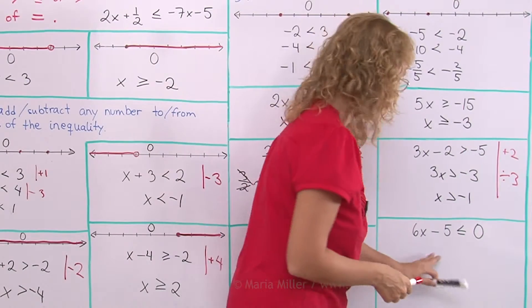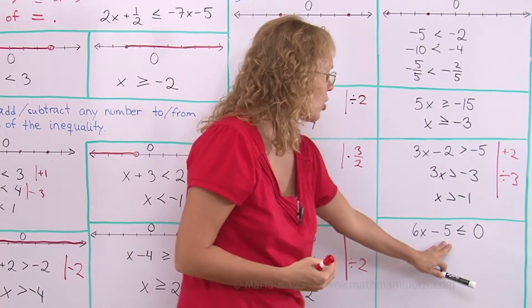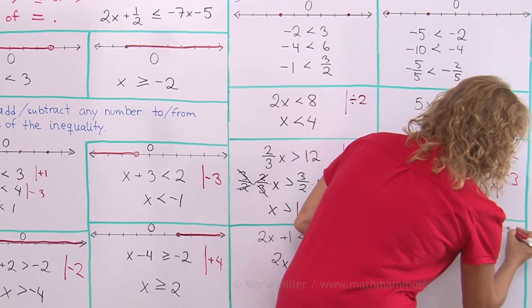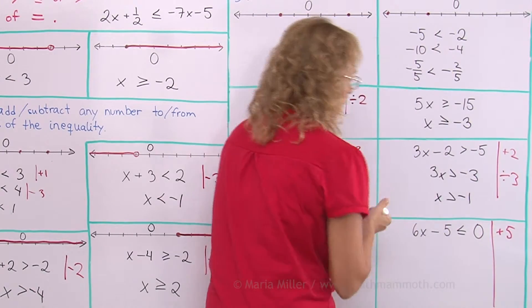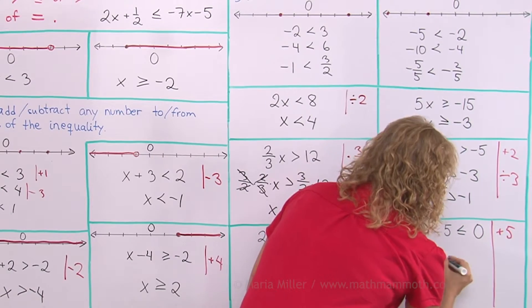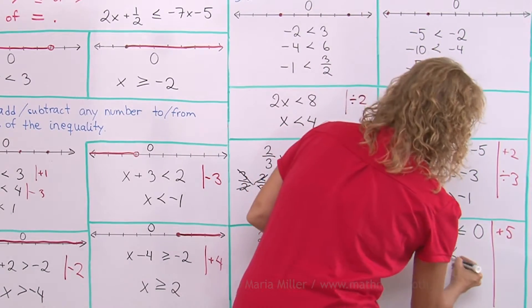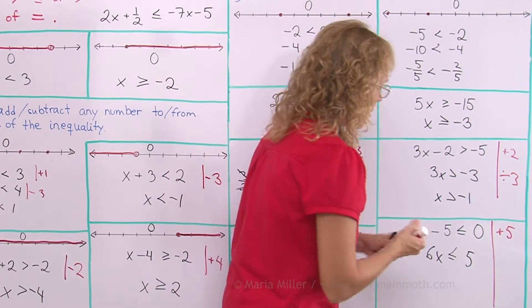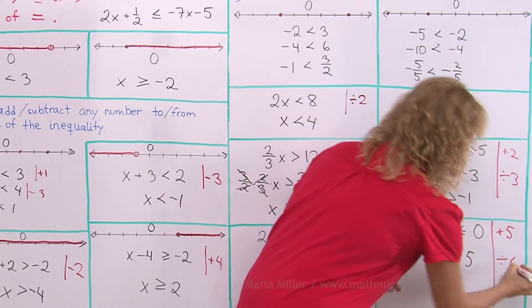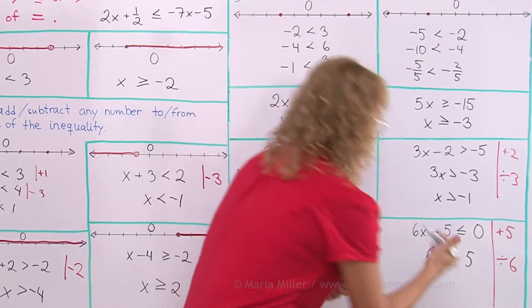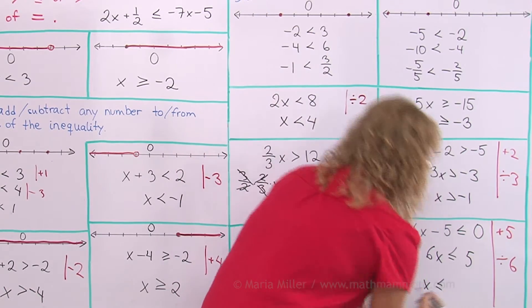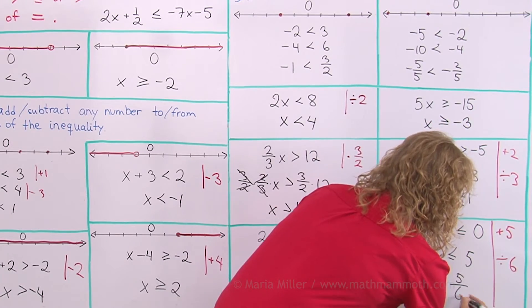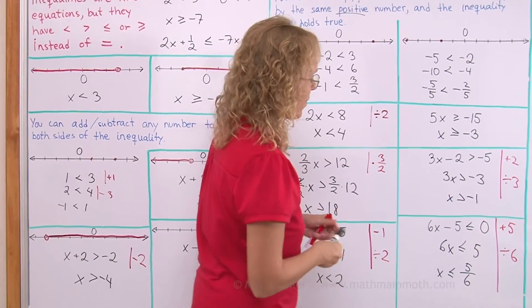And here, again, I want to have x isolated on this side. So I will add 5 to both sides. Then 6x is alone here. And then add 5 here. So we get 5, 0 plus 5. And then divide by 6. And we get x alone and greater than or equal. And here, 5 divided by 6, which is of course 5 sixths.